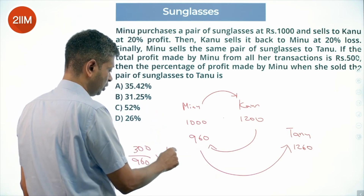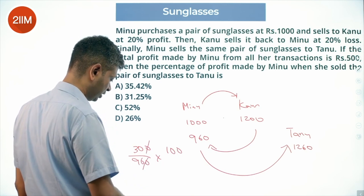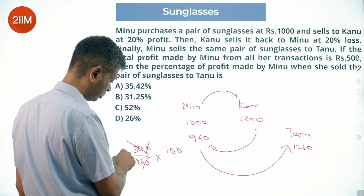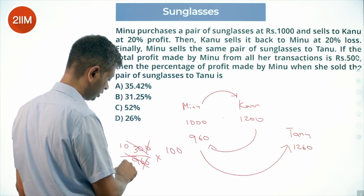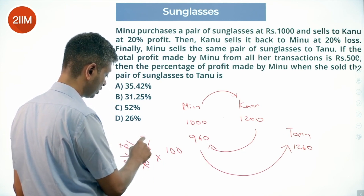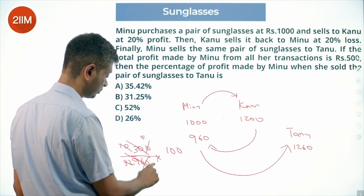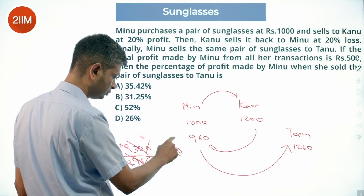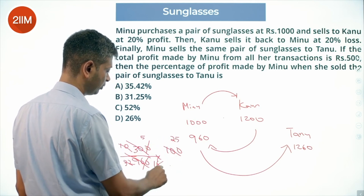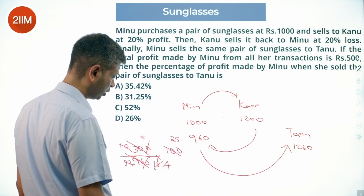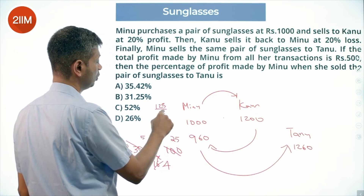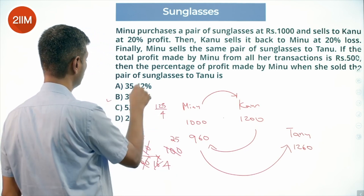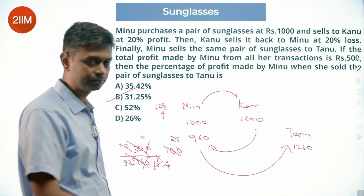Simplifying: 300/960 → divide by 3 → 10/32 → 5/16 → 25/80 → 125/4. That gives 31.25%. Nice.